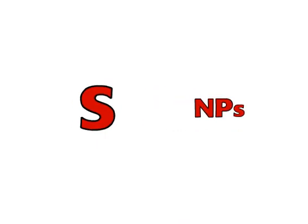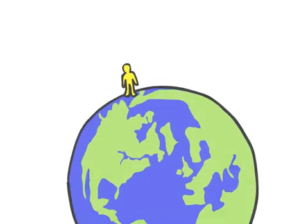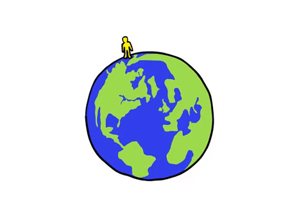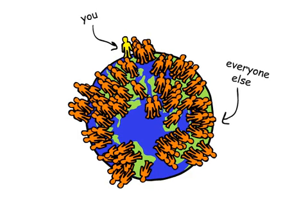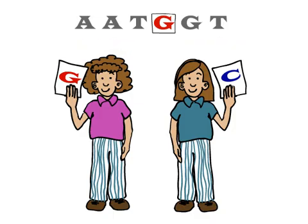There are around 10 million SNPs in the human genome, which account for many of the genetic differences between you and everyone else on the planet. Some SNPs account for differences in appearance. Others can affect how we develop diseases or respond to drugs.